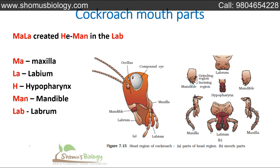Now we look at the cockroach mouth parts, which are commonly asked in NEET. The easy mnemonic is: 'Mala created he-man in the lab.' MA for maxilla, LA for labium, H for hypopharynx, man for mandible, and lab for labrum. So the mouth parts are maxilla, labium, hypopharynx, mandible, and labrum.